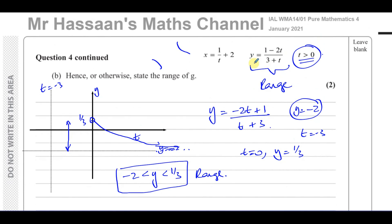Using the fact that the y part of the parametric equation gives the range and the x part gives the domain, we get the same answer as using the Cartesian form — but this method is quicker. So that completes question four, revisited, from January 2021.